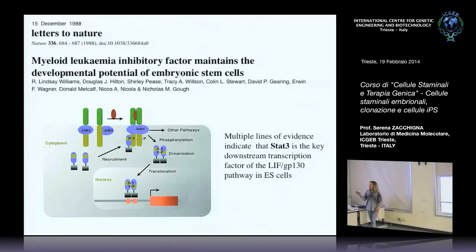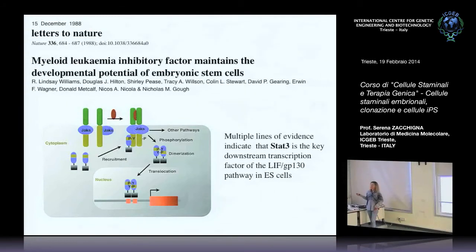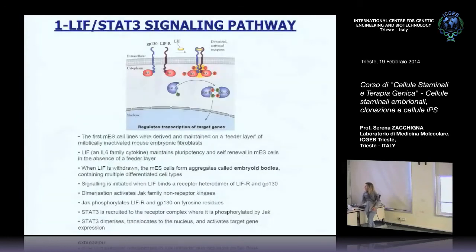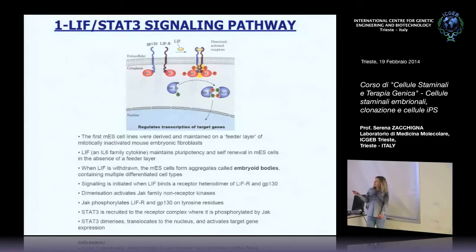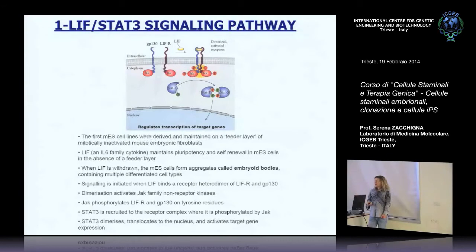Il LIF è una proteina che interagisce con il LIF receptor, associato al cofattore GP130. Quando il LIF lega il suo recettore espresso sulla cellula staminale embrionale, il recettore — di tipo tirosin-chinasico — si autofosforila e va a fosforilare il fattore di trascrizione STAT3, che entra nel nucleo a regolare la trascrizione dei geni target, impedendo così il differenziamento della cellula.